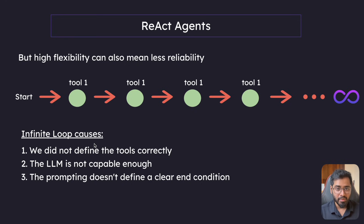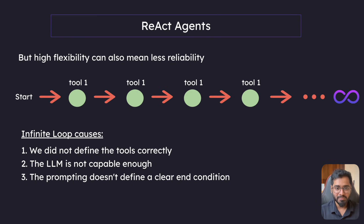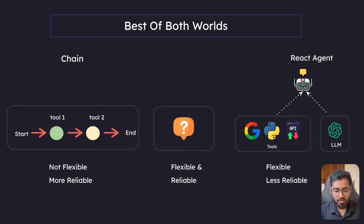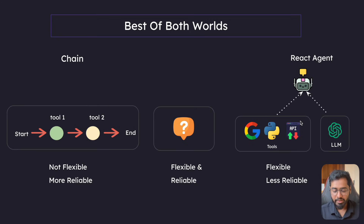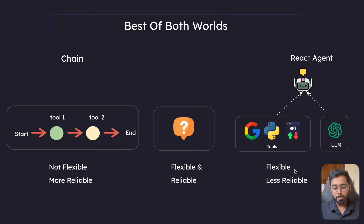There could be a couple of reasons why this happens. We did not define the tools correctly, the LLM is not capable enough, or the prompting doesn't define a clear end condition. So the React agent is very flexible, but it is less reliable because it is not really in our control completely.